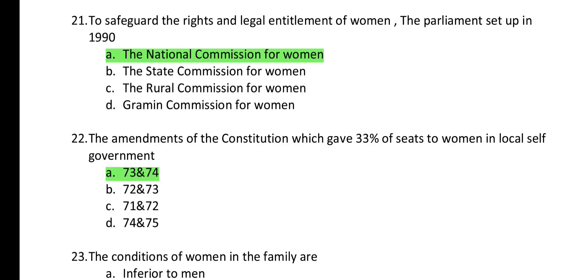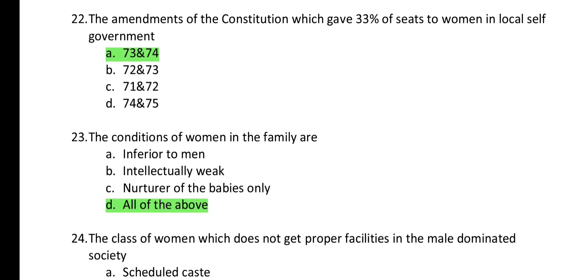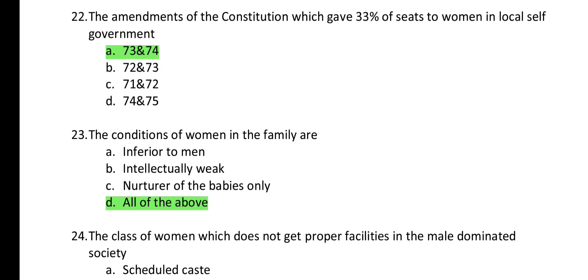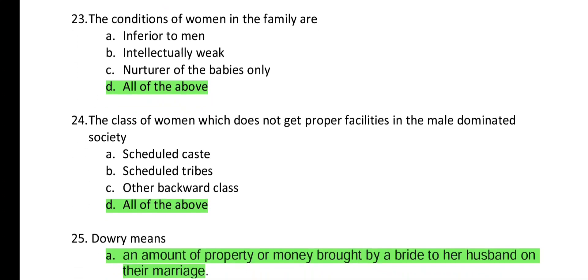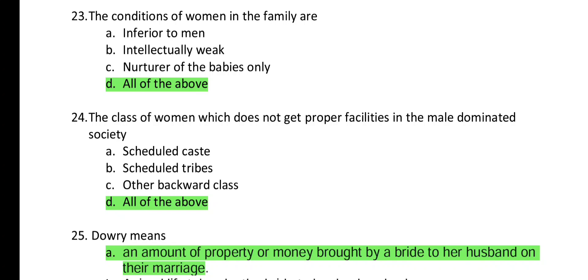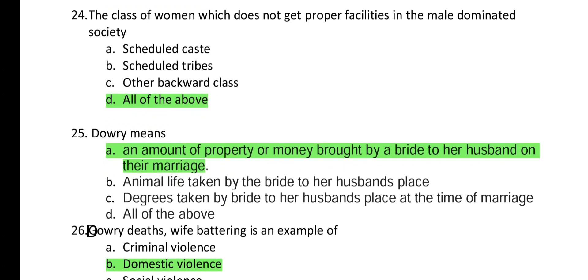Question 22: The constitutional amendment which gave 33% of seats to women in local self-government was through the 73rd and 74th Amendment Act. Question 23: The conditions of women in the family are — all the above: inferior to men, intellectually weak, and nurturer of babies only. Question 24: The class of women which does not get proper facilities in a male-dominated society is all the above — scheduled caste, scheduled tribe, and other backward classes.